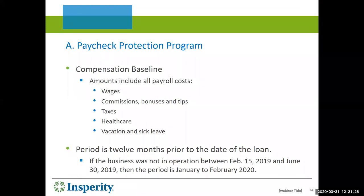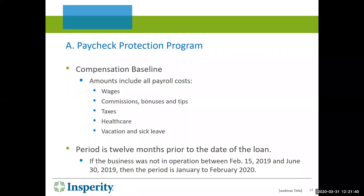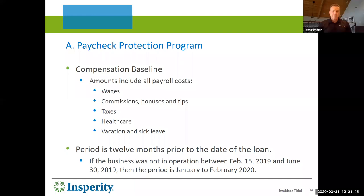If you are a new business and were not in existence in 2019 — particularly between February 15th and June 30th — then you just do a two-month period test, January to February 2020, and use that to calculate your average monthly amount. That is probably pretty complicated.